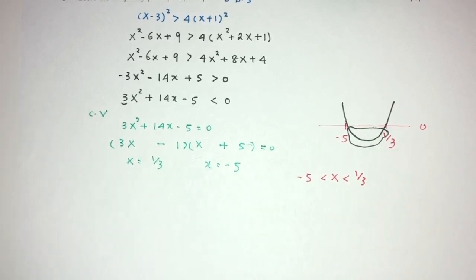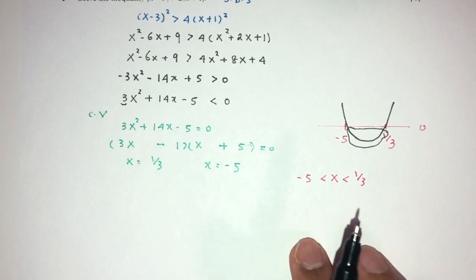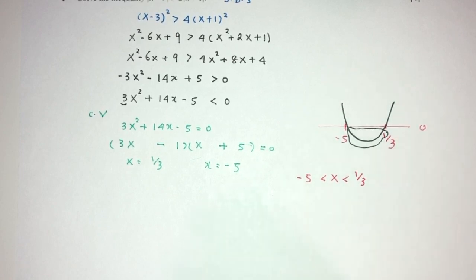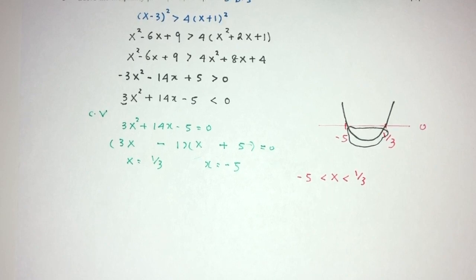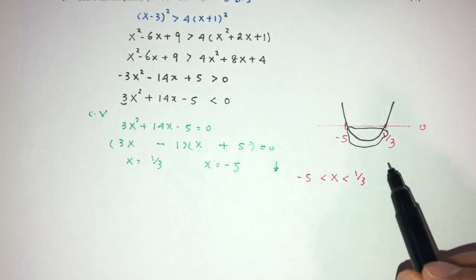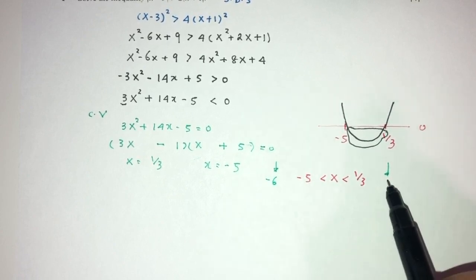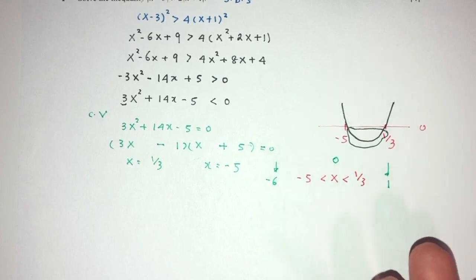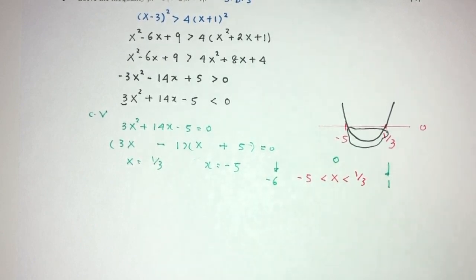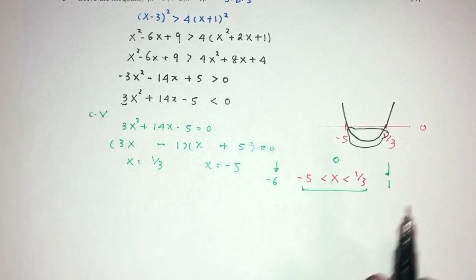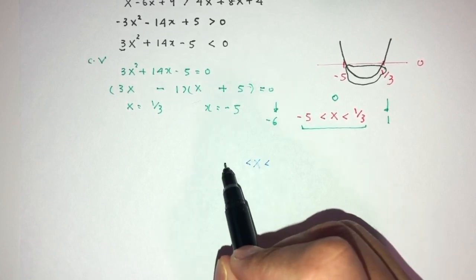For A-level math, I always advise to double check the values — sometimes one of the limits may not work. The best way is to draw graphs, but we can also test manually. Take one value from outside, such as minus 6, one value from the other side like 1, and one value inside like 0, to verify. Outside values should not satisfy the inequality, but values inside should. In the end, this seems correct: x must be between minus 5 and 1 over 3. That is question number 1.